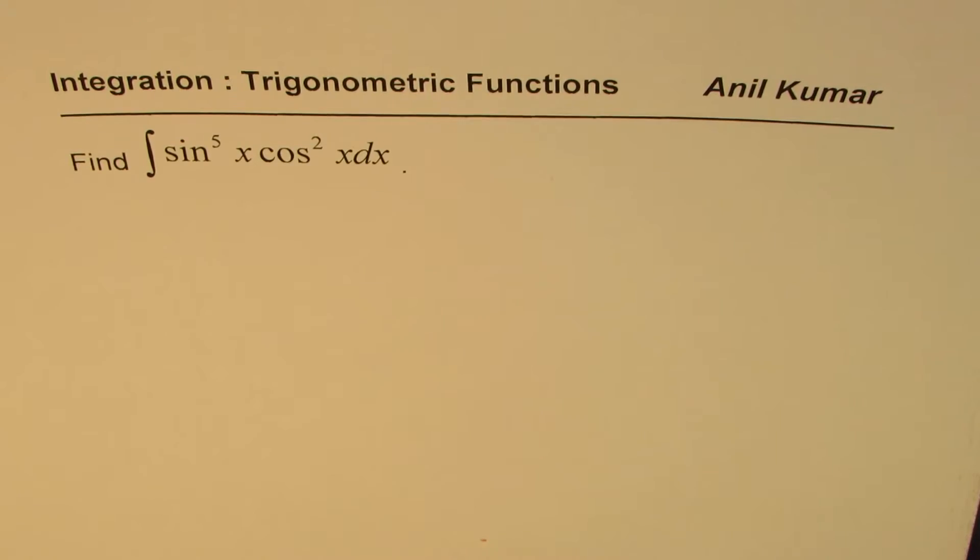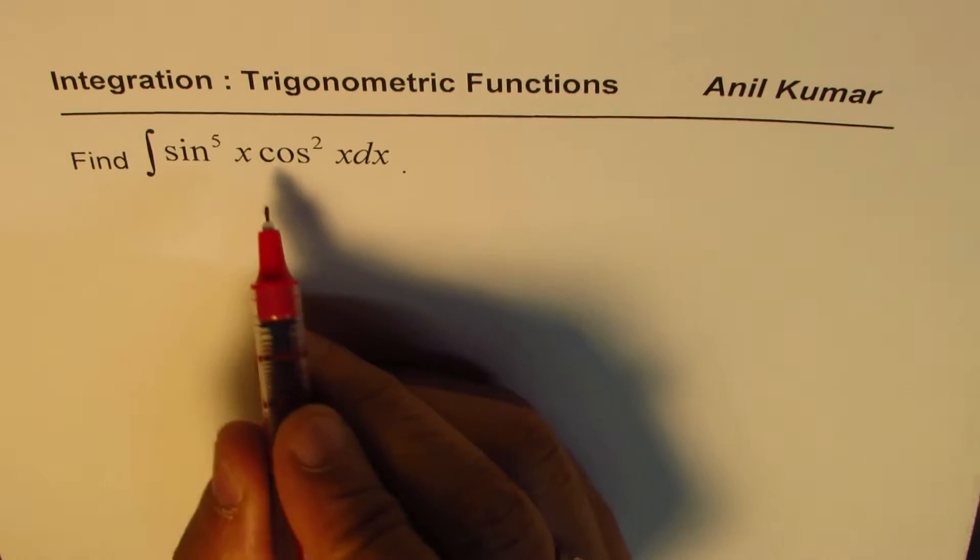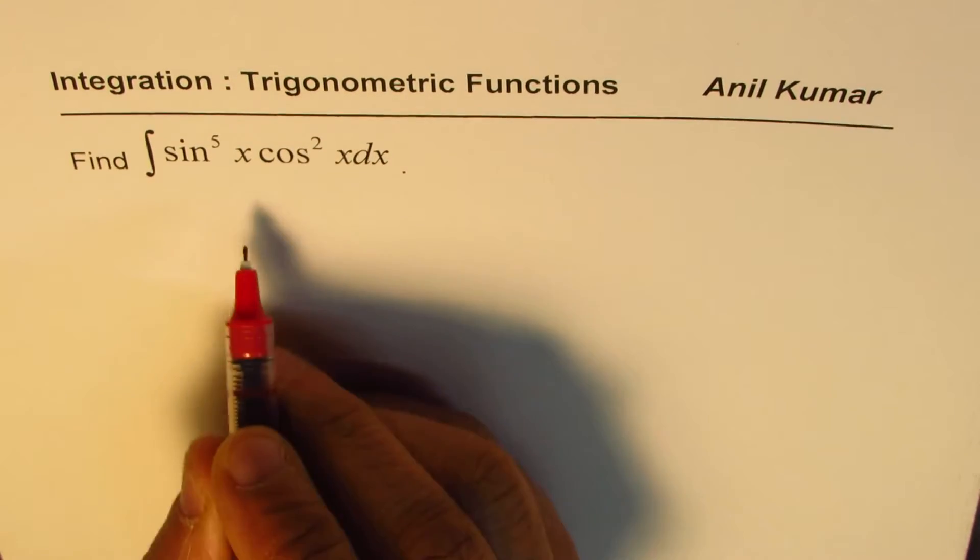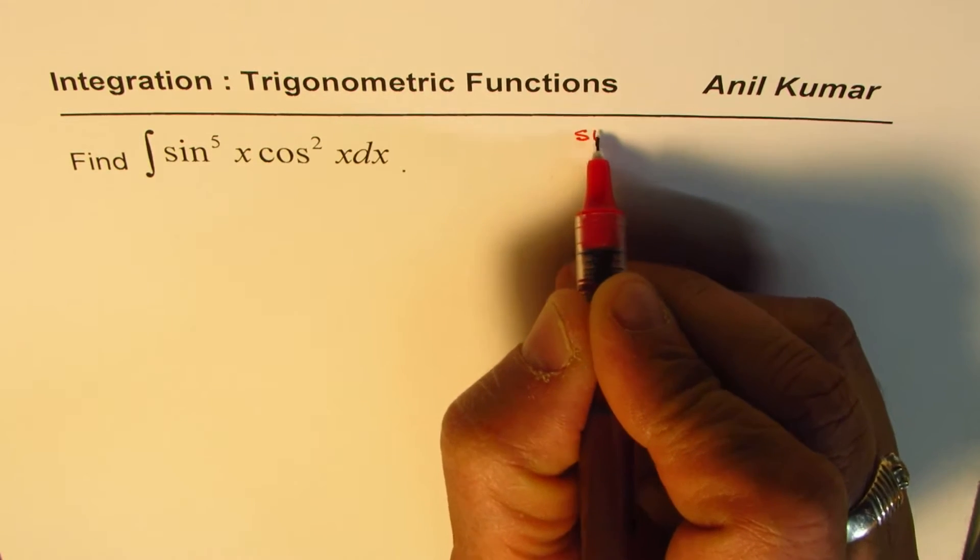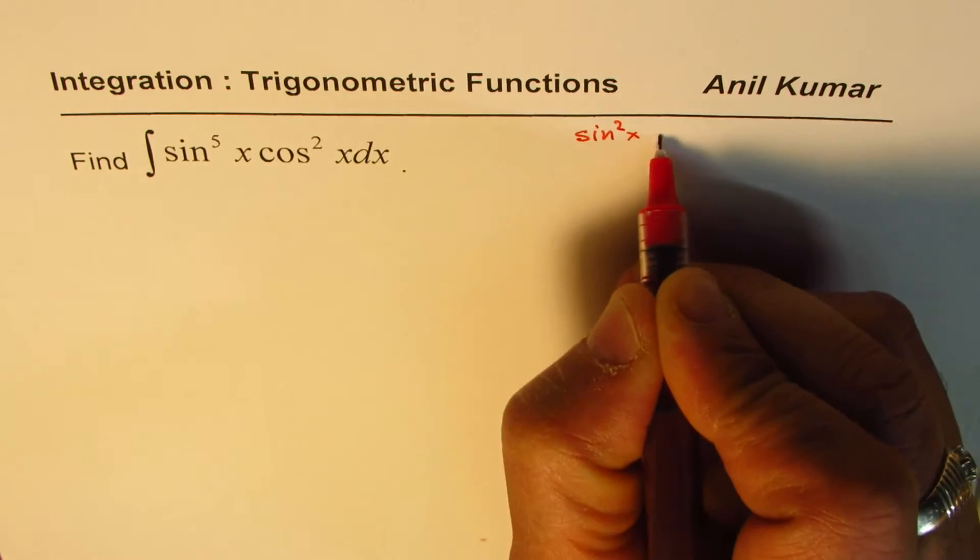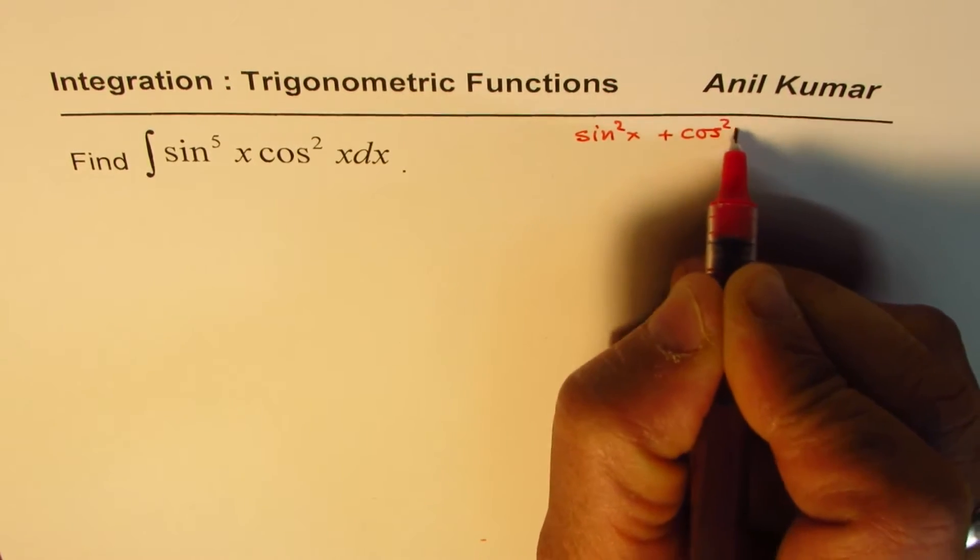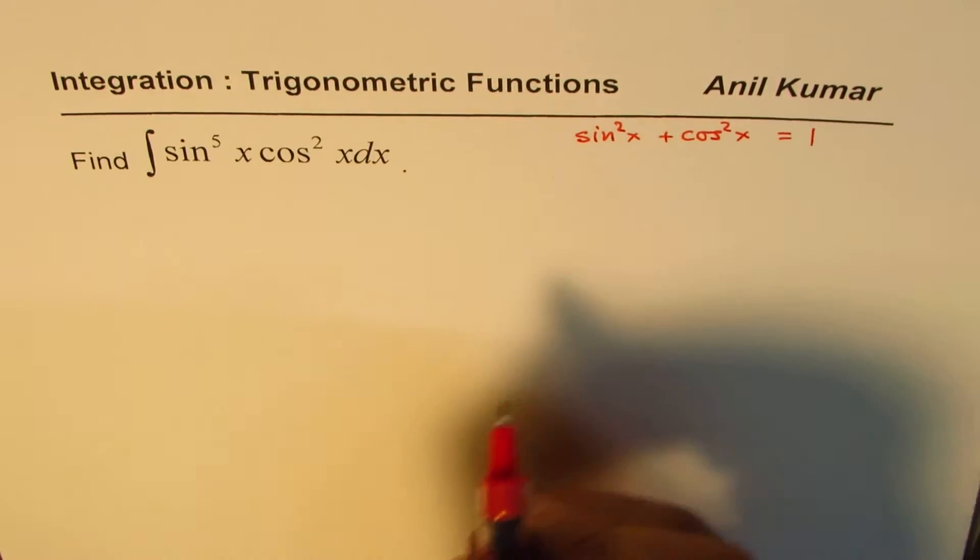Now, when you have these combinations, you should look into how they are related. So we know they are related as sine square x plus cos square x equals to 1. Sine square x plus cos square x equals to 1.